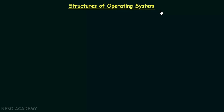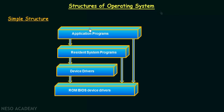First, let us look at the first structure that was followed in designing operating systems, which was used in the very beginning — the olden operating systems — which we call as the simple structure. The simple structure was followed for most of the operating systems designed in the very beginning. These simple structured operating systems did not have a very well-defined structure. The diagram we see here is the figure of a simple operating system structure followed by the Microsoft Disk Operating System, MS-DOS, which was designed very long back.